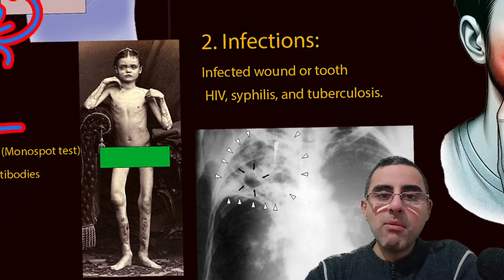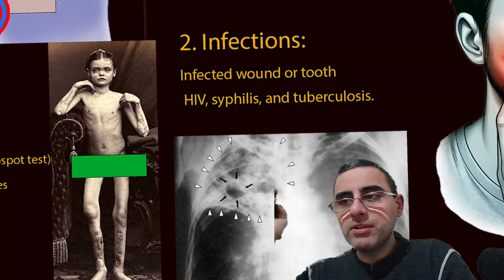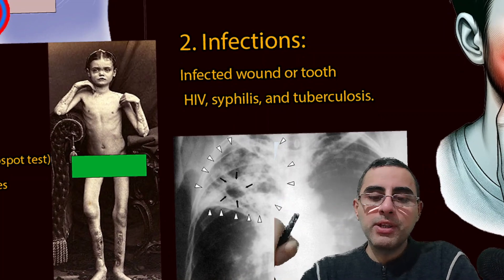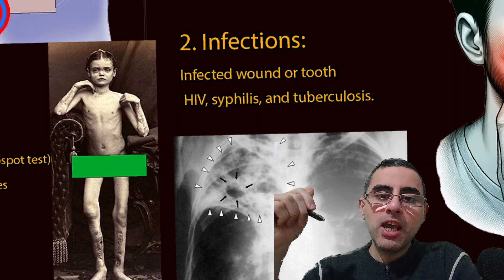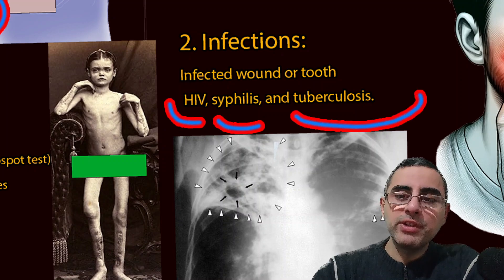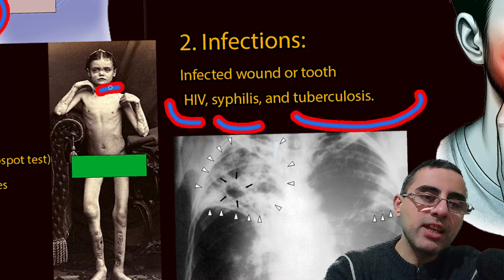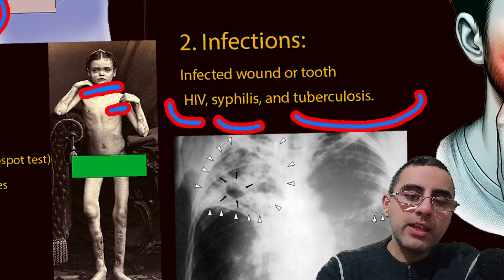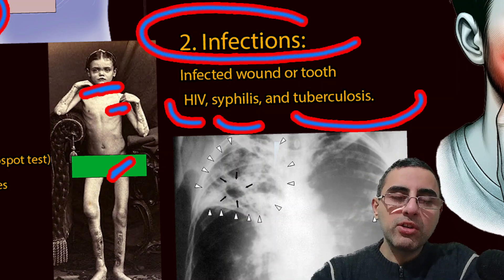The second most common cause is infections. Viral and bacterial infections can cause enlarged lymph nodes, especially if these infections are not localized and are systemic. For example, HIV, syphilis, and tuberculosis can cause enlarged lymph nodes in several places at the same time, such as the neck, armpit, and groin.